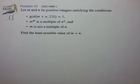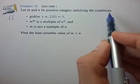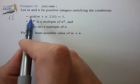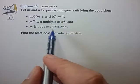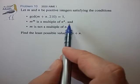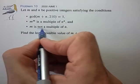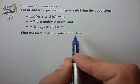Hi, this is problem 10 from the 2020 AIME I. Let m and n be positive integers satisfying the condition that the greatest common divisor between m plus n and 210 is 1, m to the n is a multiple of n to the n, and m is not a multiple of n. Find the least possible value of m plus n.